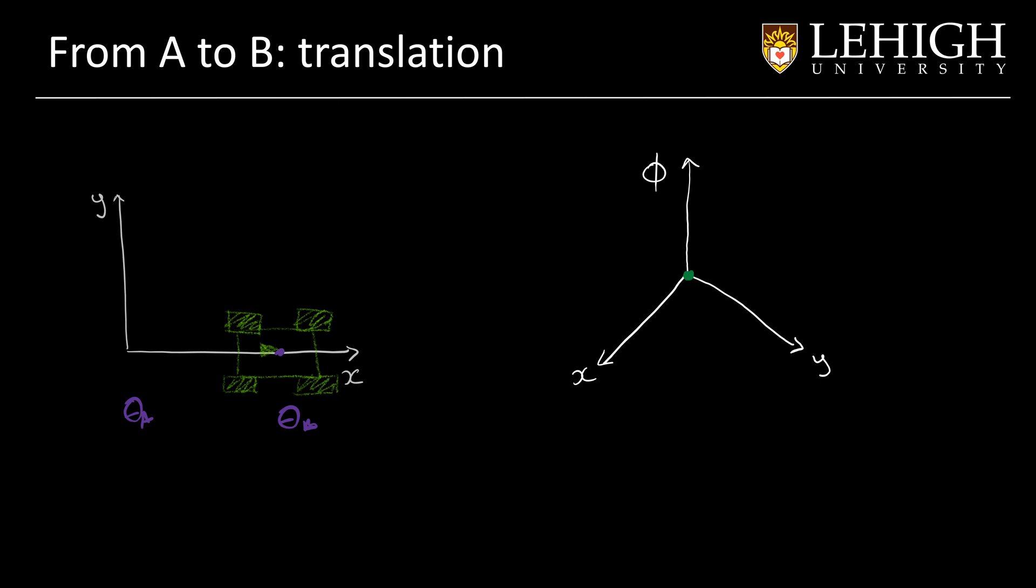If we see the configuration space, this will be big theta. And we have a point in the origin, this is the current configuration and this is the next configuration.